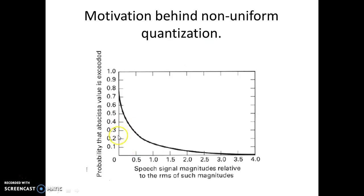In short, we want to have more quantization levels from 0 to 0.5 or 0 to 1 and less quantization levels from 1 to the greater magnitudes. So these values are less likely to occur. So you need less quantization levels for those. These values are more likely to occur. So you need more quantization levels here.